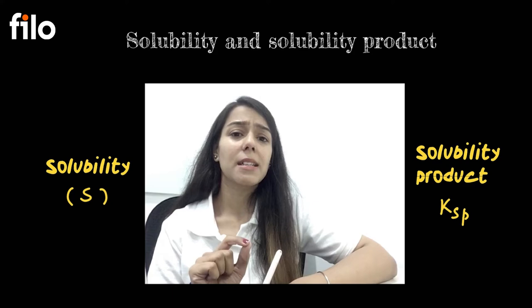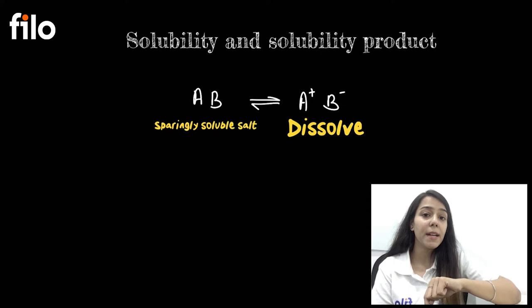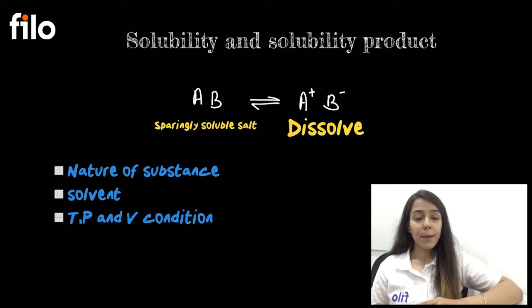So let's consider that I have a salt AB. I have put it in water, then what will happen? It will dissolve. Now it was a solid form and then it will dissolve. Now how much solubility will be? That will depend on what is the nature of the substance that we have taken, what solvent we are dissolving in, and what temperature and volume conditions will be. But what is solubility product?